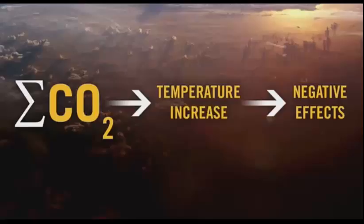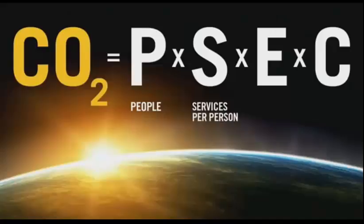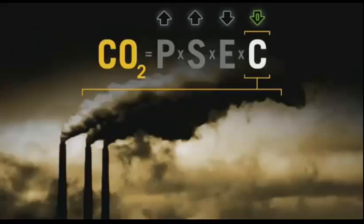I'm going to talk today about energy and climate. The equation on CO2 is actually a very straightforward one. If you sum up the CO2 that gets emitted, that leads to a temperature increase, and that temperature increase leads to some very negative effects. This equation has four factors: CO2 on the left that you want to get to zero, based on the number of people, the services each person is using on average, the energy on average for each service, and the CO2 being put out per unit of energy.